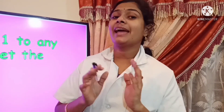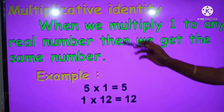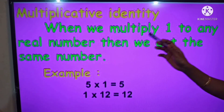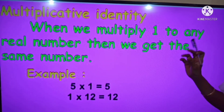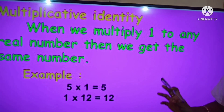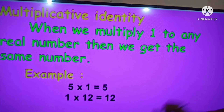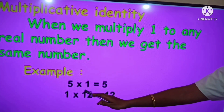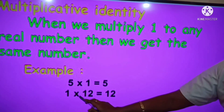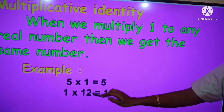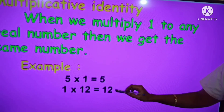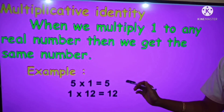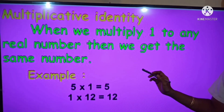Now we have seen additive identity and additive inverse. The next one is multiplicative identity. When we multiply 1 by any number, we get the same number itself. For example, 5 into 1 equals 5, and 1 into 12 equals 12. So 1 is the multiplicative identity.